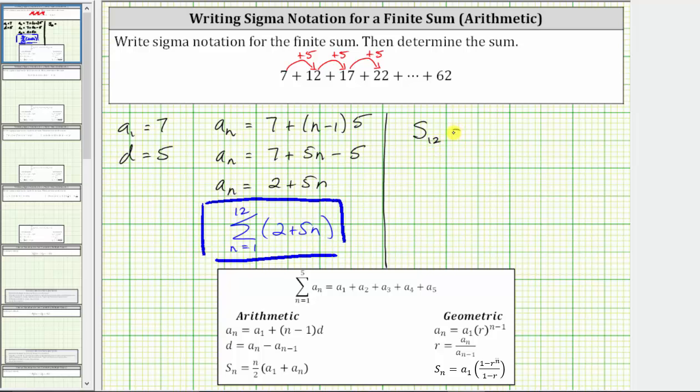As soon as we write S sub 12, we know n is equal to 12. So S sub 12 is equal to n divided by two, which in this case is 12 divided by two, times the quantity a sub one plus a sub n is a sub one plus a sub 12, or the sum of the first term and the last term in the series, which in our series is seven plus 62.